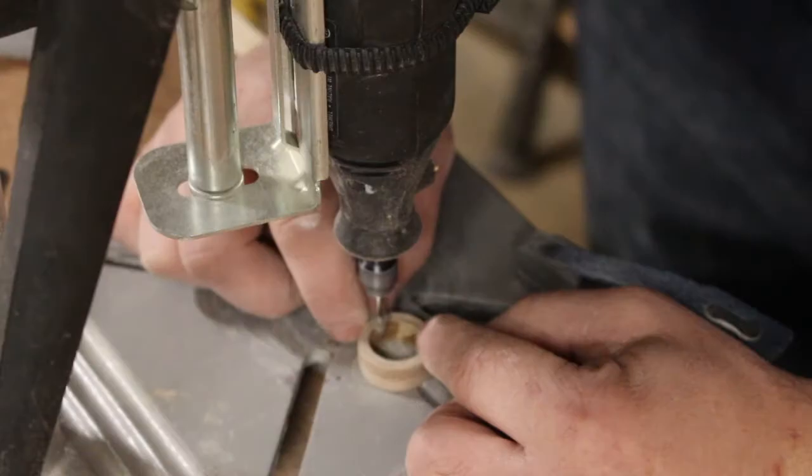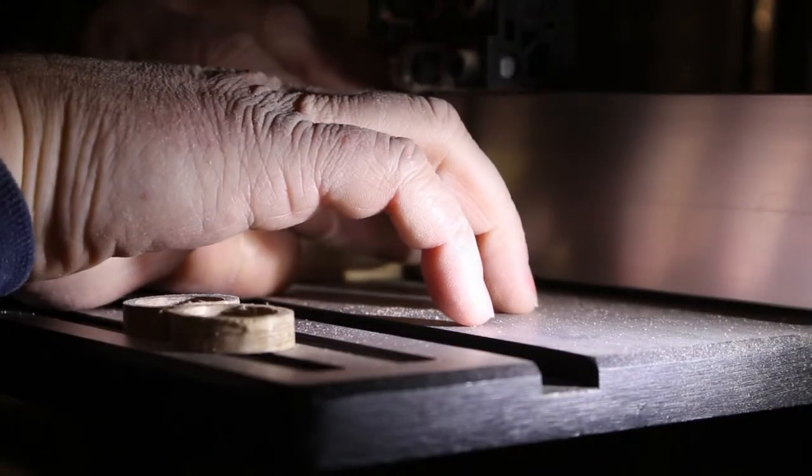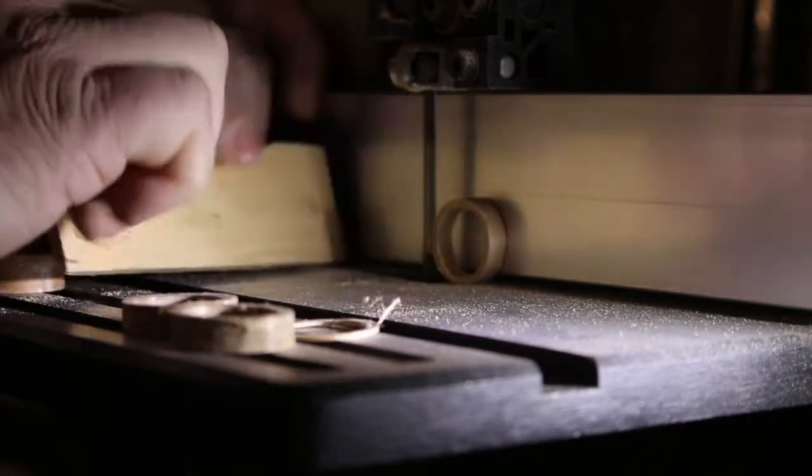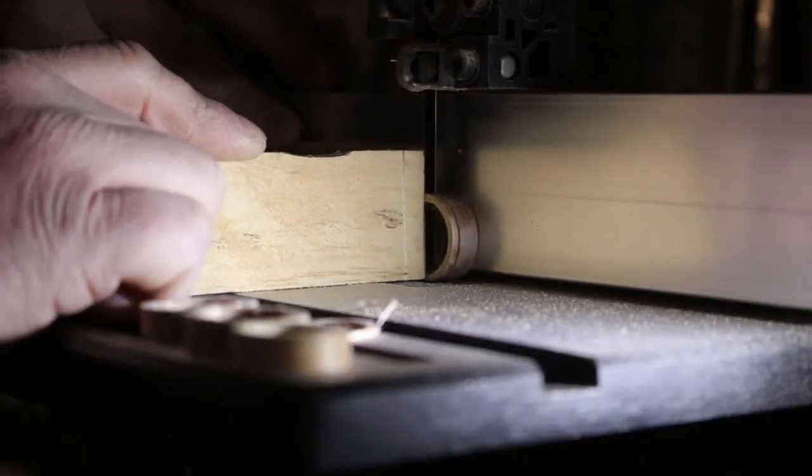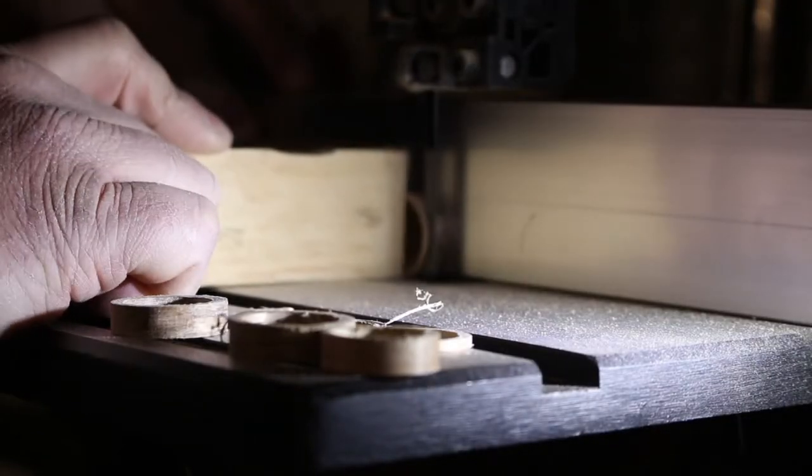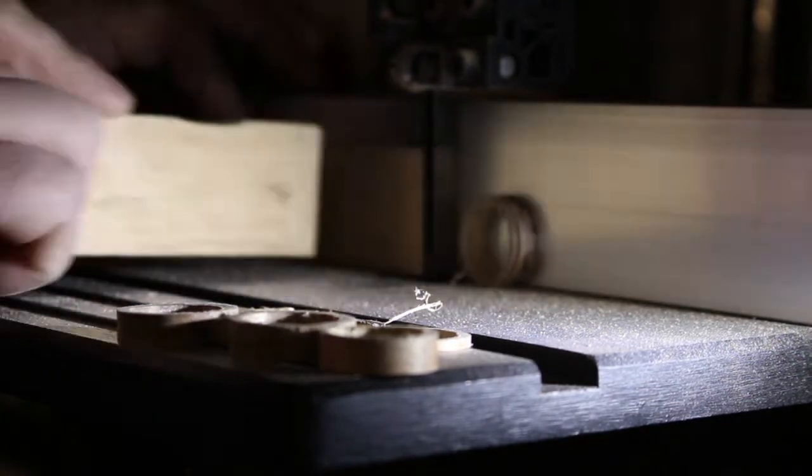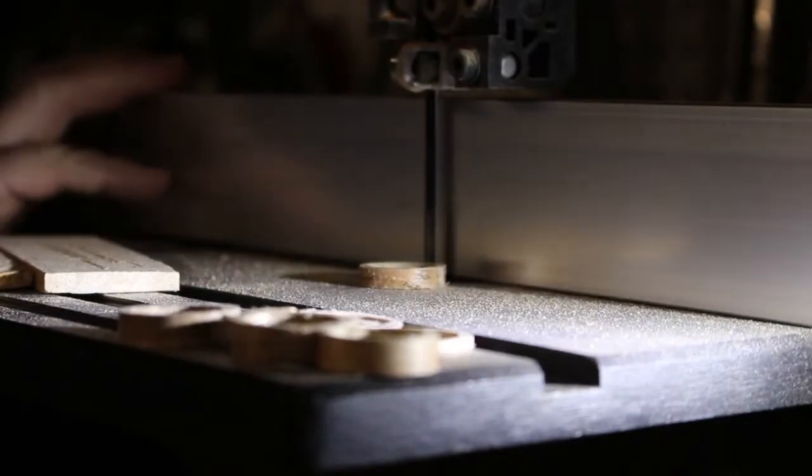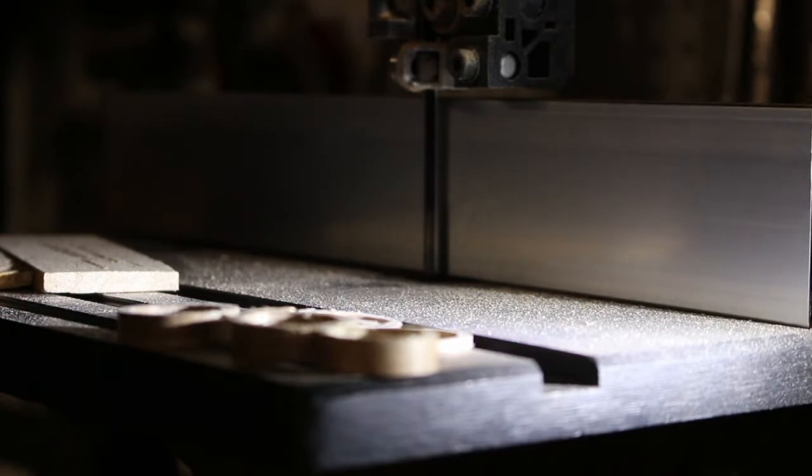Next I used what I'm going to call a diamond chamfer bit, which is basically a cone shape on a stick, to put a slight chamfer on the inside and outside edges of each ring. This makes putting them on and taking them off much easier. Now you could stop here and put a finish on them, but what's the fun in that? So I decided to take two of the rings and have a contrasting center section. So I cut each ring on the bandsaw to make sort of wafers that I could sandwich together on top of each other.